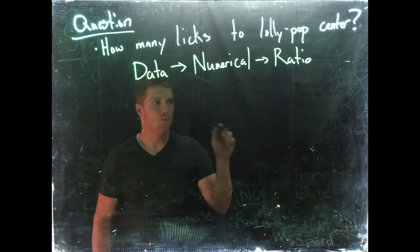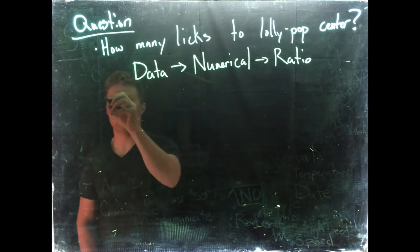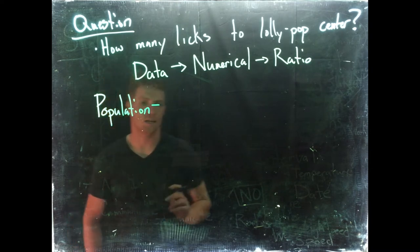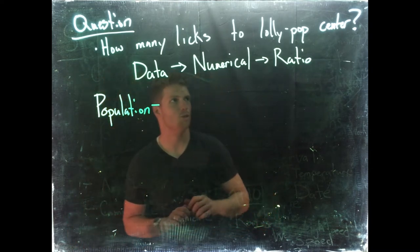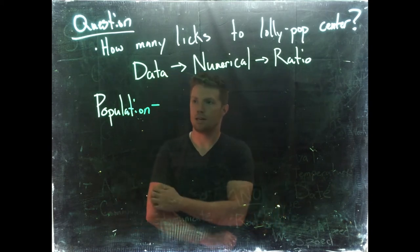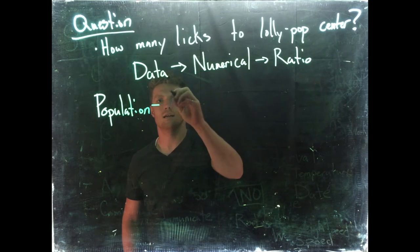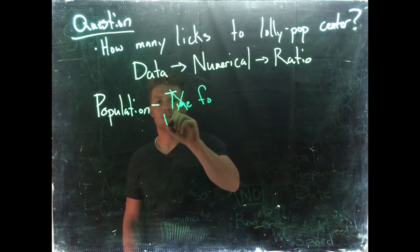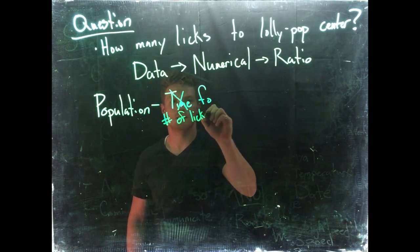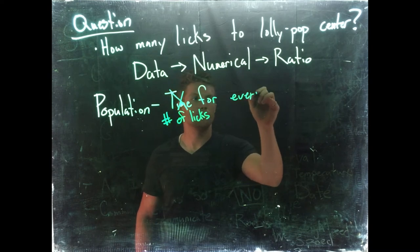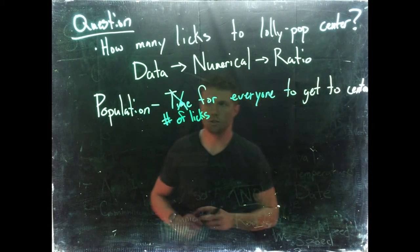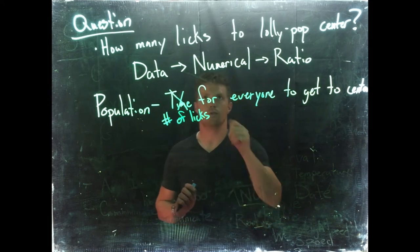Okay, so we know what type of data that we have here, and we can start asking ourselves some other questions like who is our population. And so here it would basically be, let's suppose this is a specific brand of lollipop, but this would be number of licks for everyone to get to center.